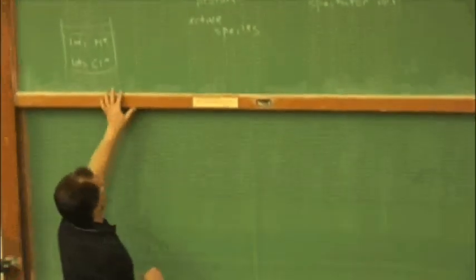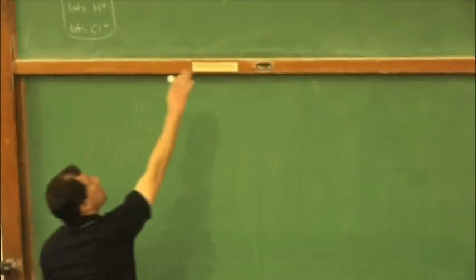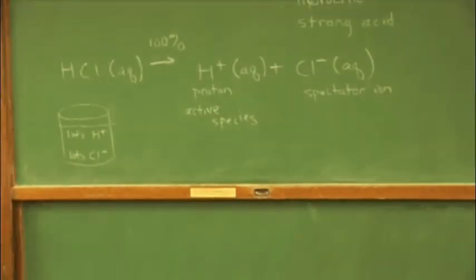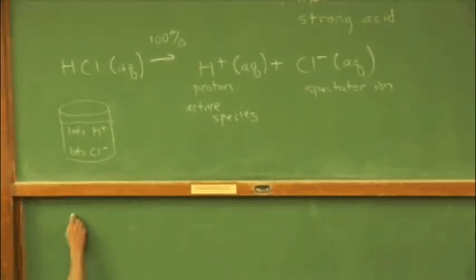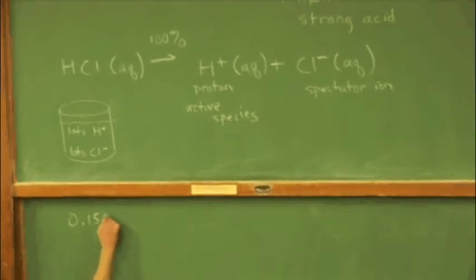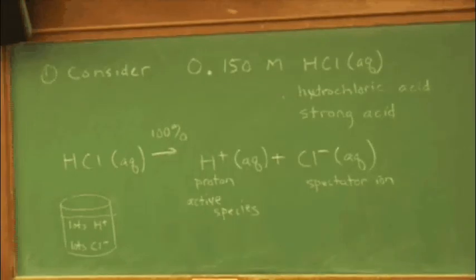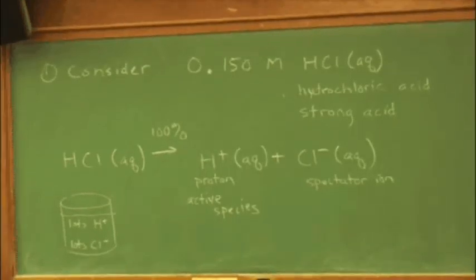Well, our balanced reaction is HCl busts up to give proton and chloride, and this has been mixed up to be 0.150 molar hydrochloric acid. But in actuality, there is no HCl where the hydrogen and the chlorine are together here.